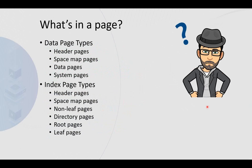What's in a page? We have header pages, spacemap pages, data pages, and system pages. In an index we've got headers, spacemaps, non-leaf pages, directory pages, root pages, and leaf pages. A page set for a table space that has undergone alters will have system pages; if you haven't altered it, you don't get them. In a segmented table space, system pages are in dedicated system segments with their own spacemap pages. LOB and XML page sets have other types of pages, but we won't go into those here.